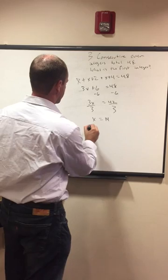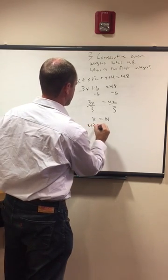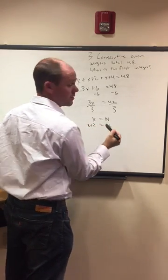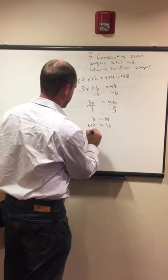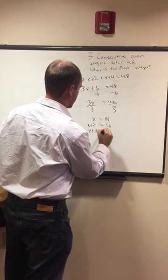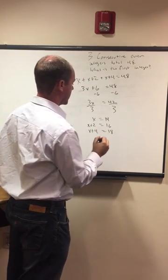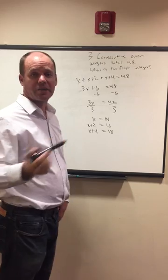If it had asked for the second integer, that would be x+2, which is 16. If it had asked for the third integer, x+4, which is 18. And those are our three answers.